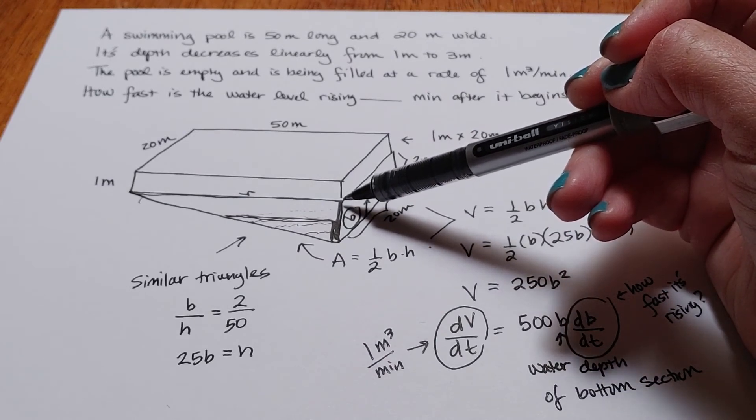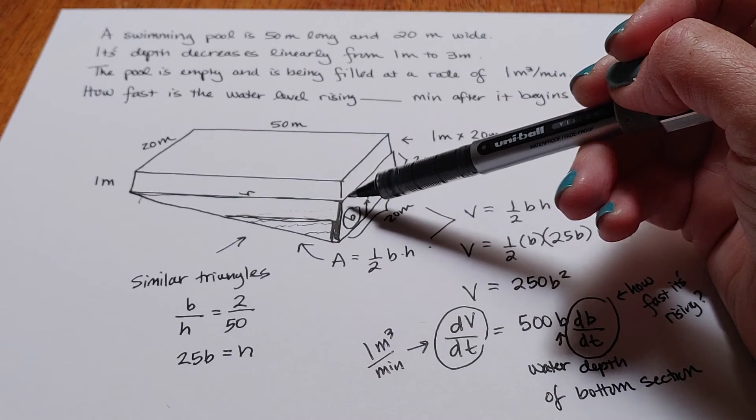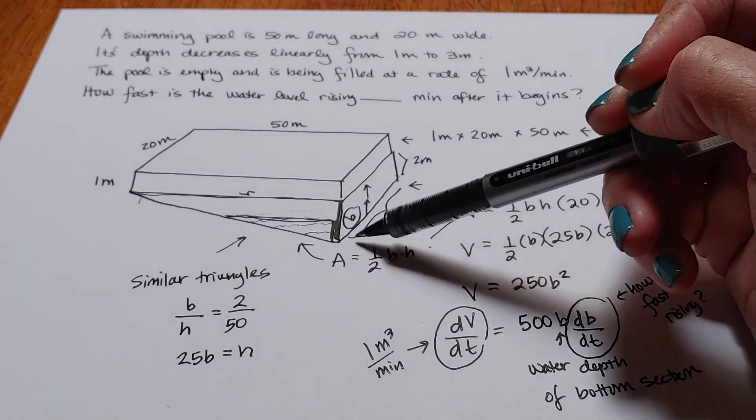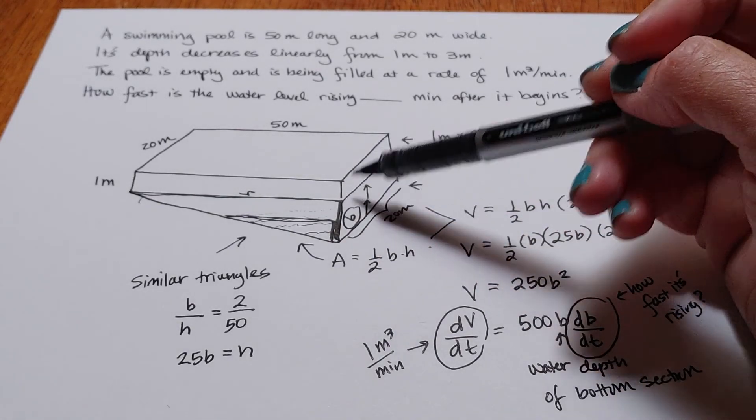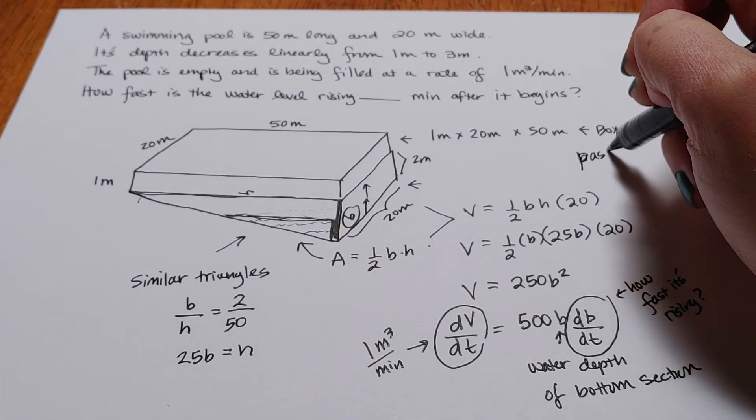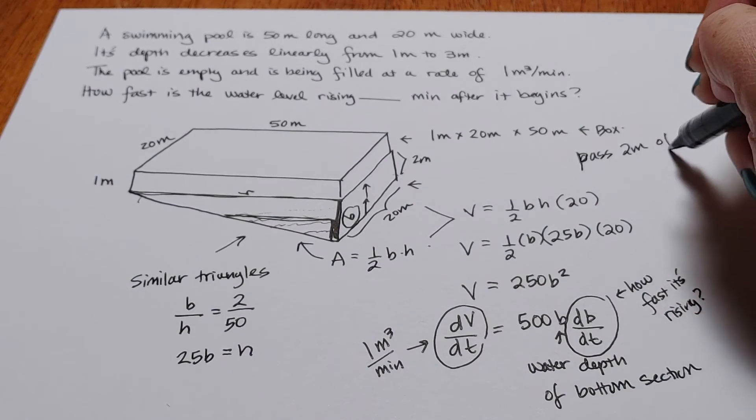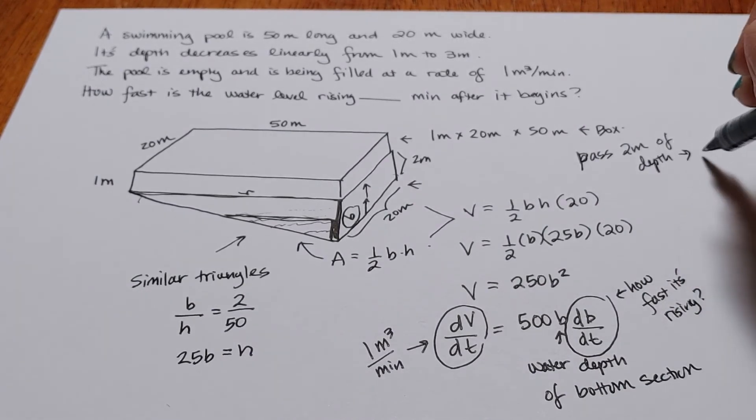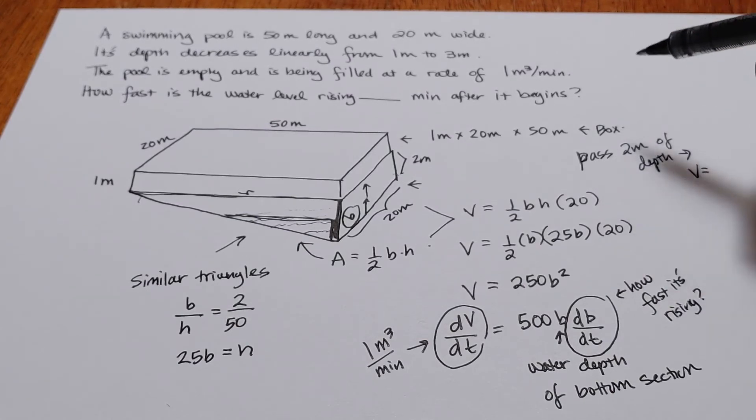So once we are past 2 meters of depth, we'll now be in the top shape. So if we pass 2 meters of depth, we'll be at the top shape, which would be a volume equals.